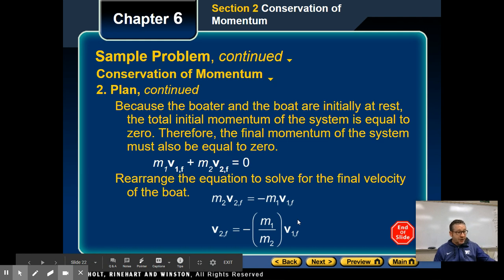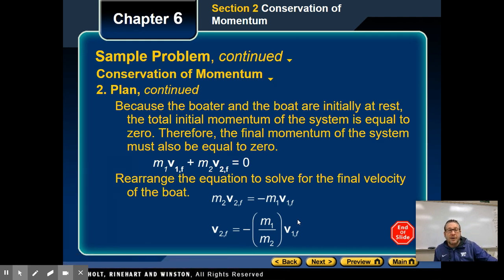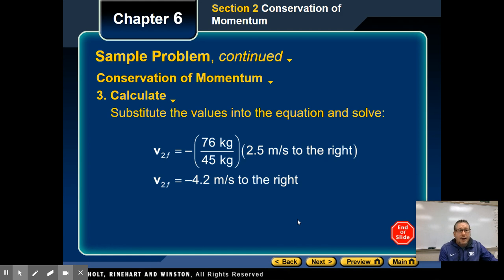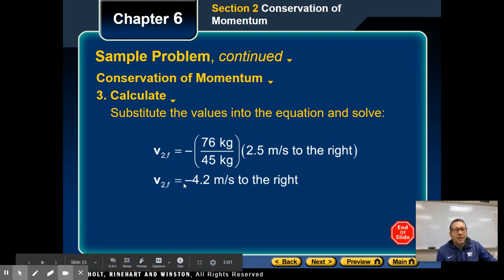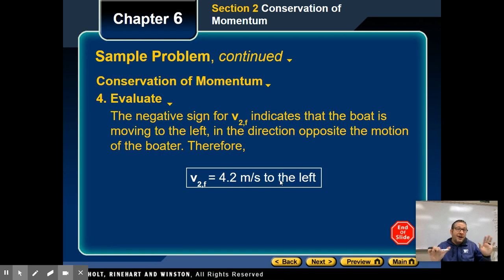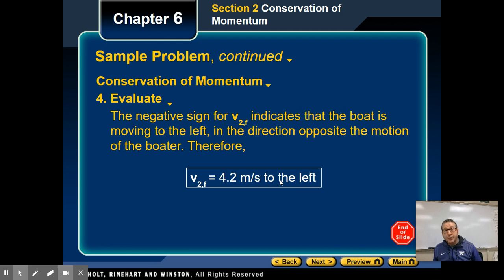Once we get it rearranged — with the two masses multiplied by the final velocity of the human — we plug in our numbers and we get negative 4.2 meters per second to the right. We're not quite done yet. Remember that the negative sign is going to change our initial direction. Our final answer: you have to remove that negative sign and change the direction. So the boat will be traveling at 4.2 meters per second to the left. Going back to that video, as those individuals stepped off to the right, that pushed the boat off to the left.